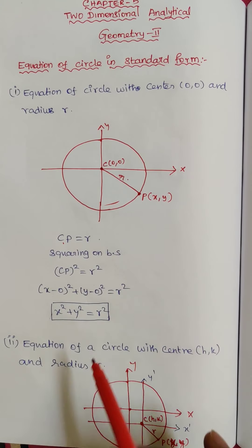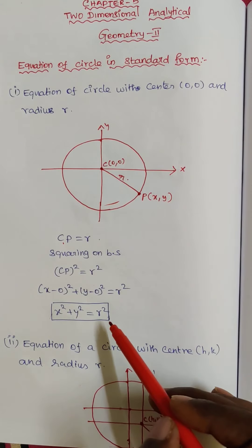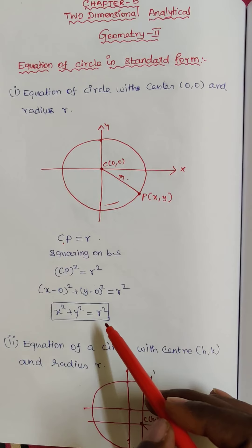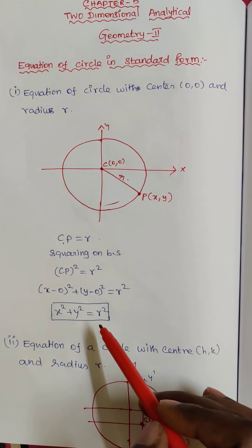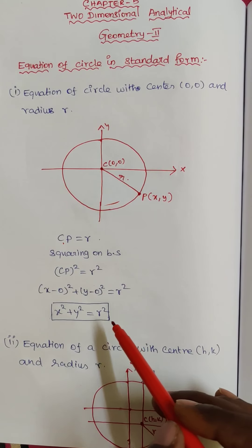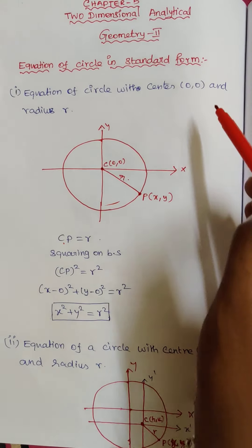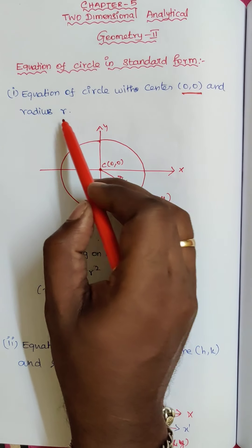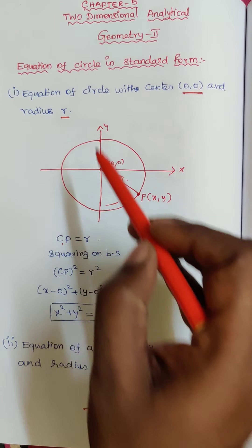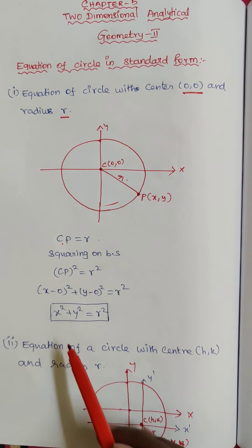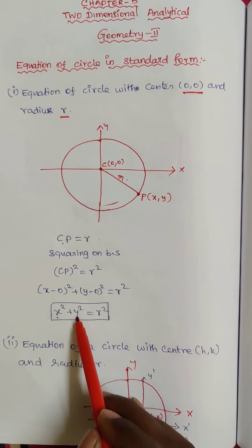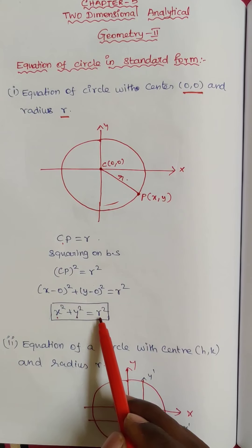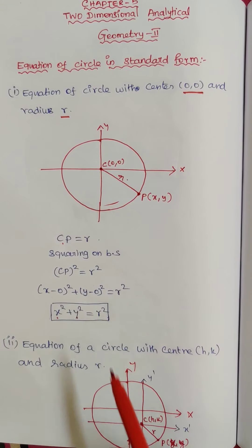This is the general equation of a circle when the center and radius are given. Center is (0, 0) and radius is r, so the equation of the circle is x squared plus y squared equals r squared.